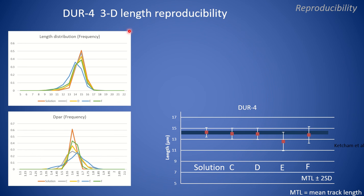Durango apatite is another sample treated as a flagship reference for etch length measurement, and all reported data agree well with reported values.